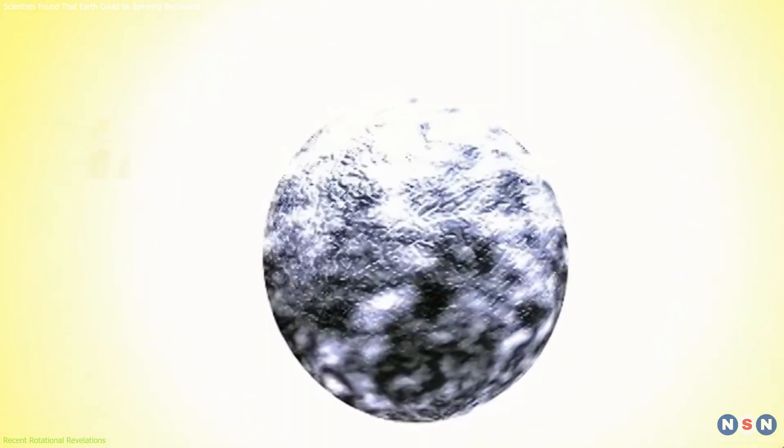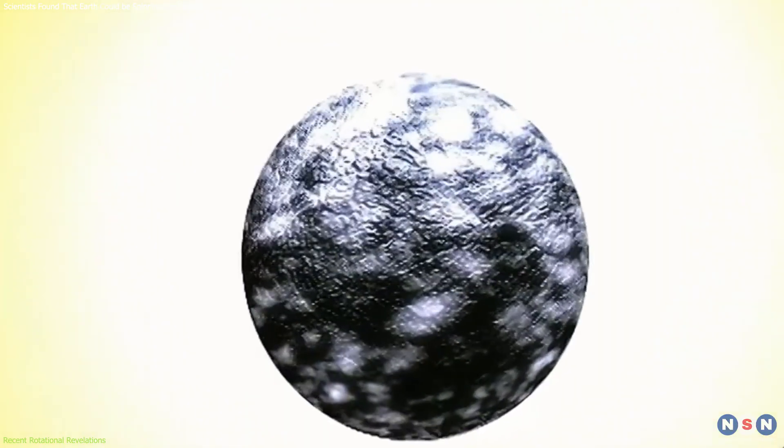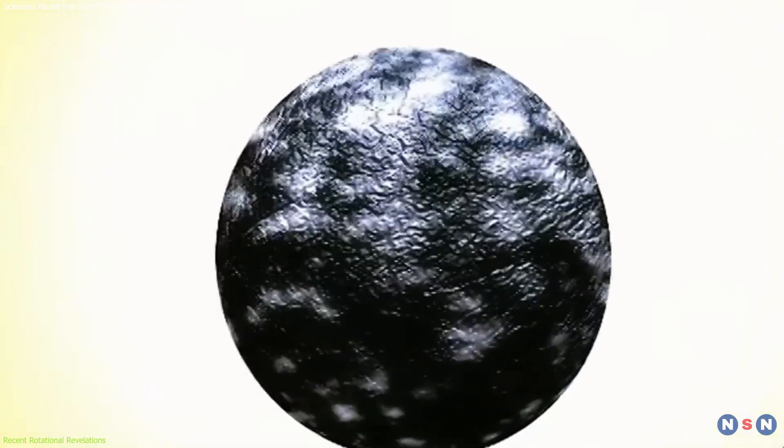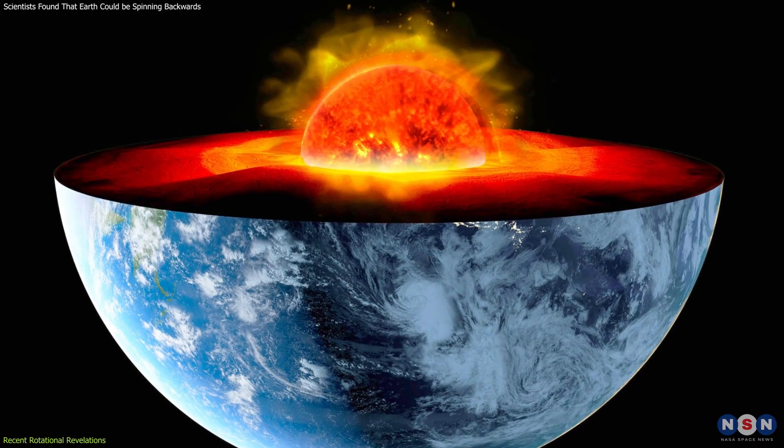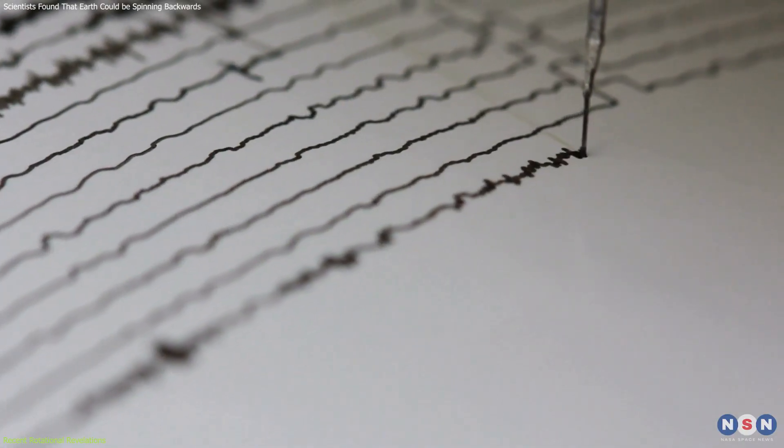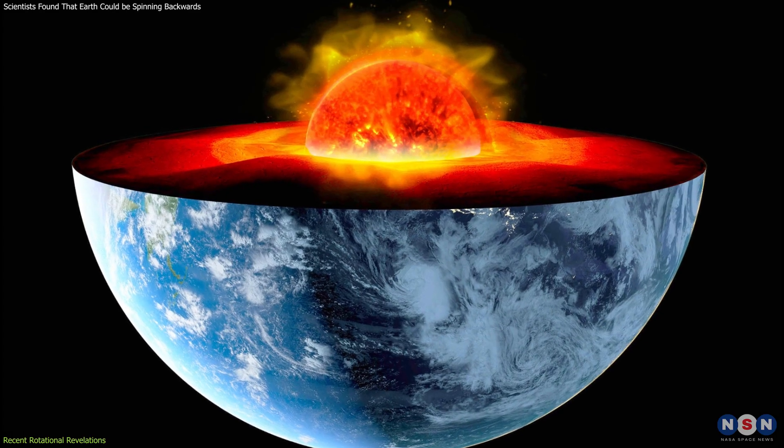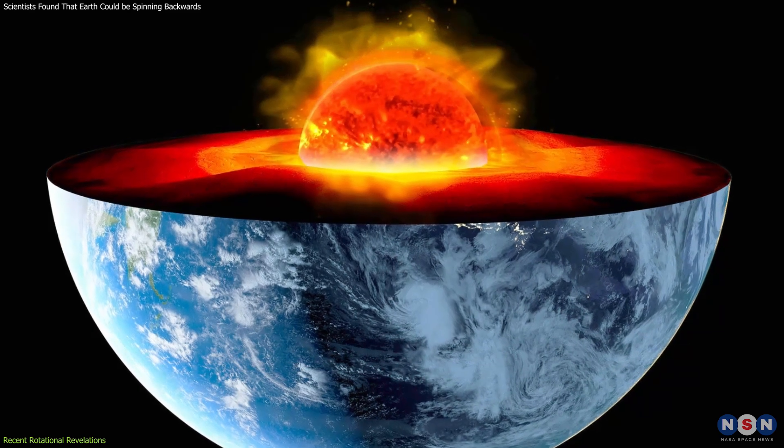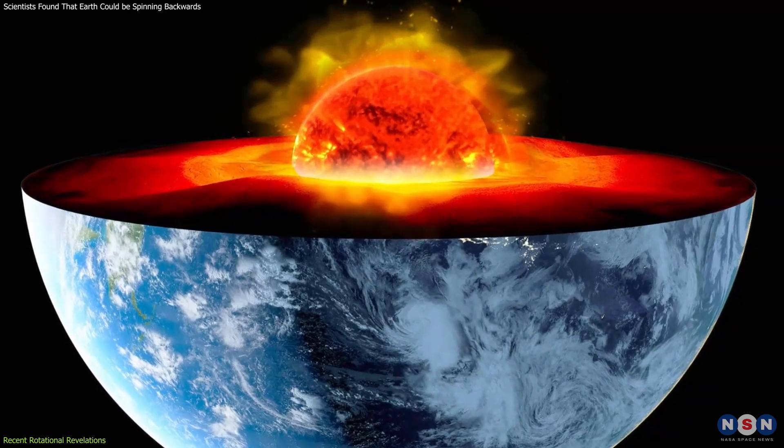Historically, the core has been thought to rotate at a slightly different speed than the surface we live on. This differential movement has been a subject of intense study and debate. Recent seismic data has shown that not only does the core rotate differently, but it has now begun moving in the opposite direction relative to the mantle.